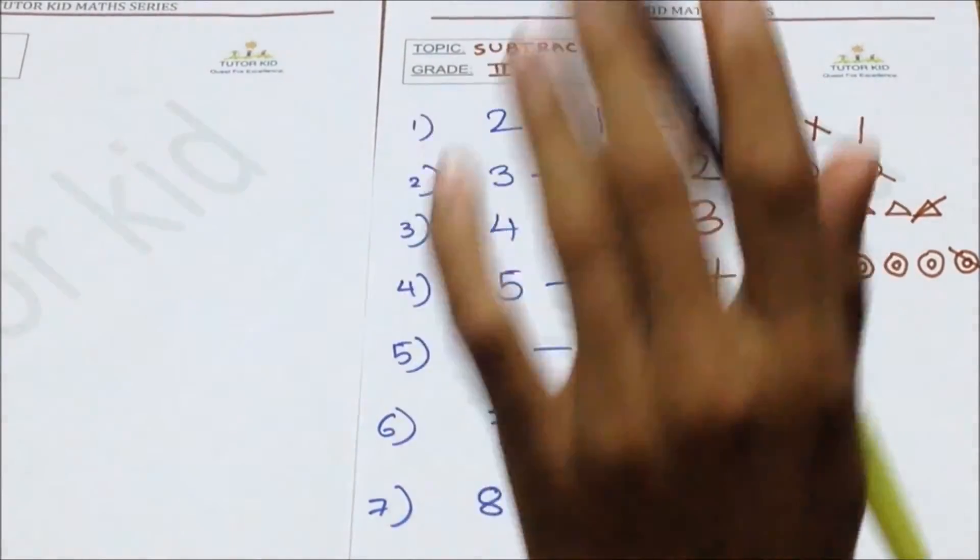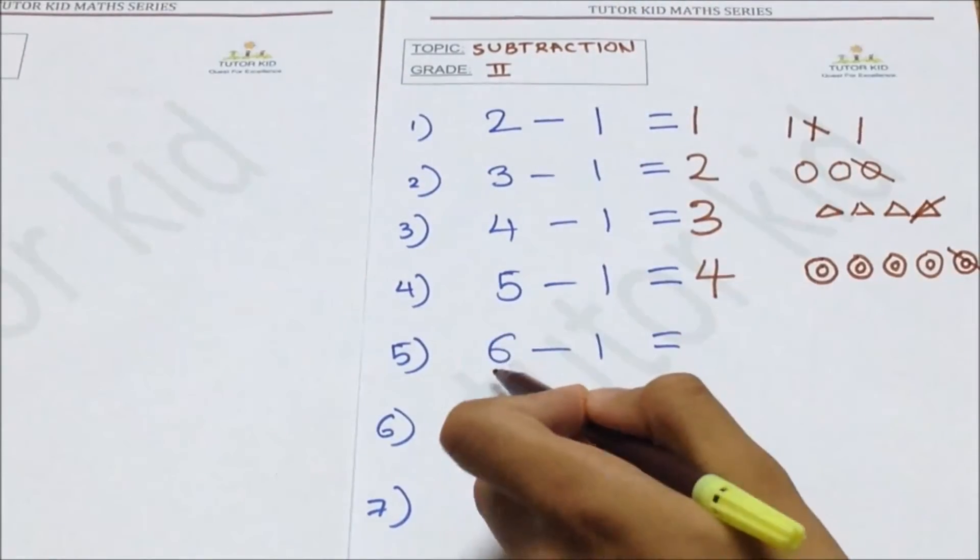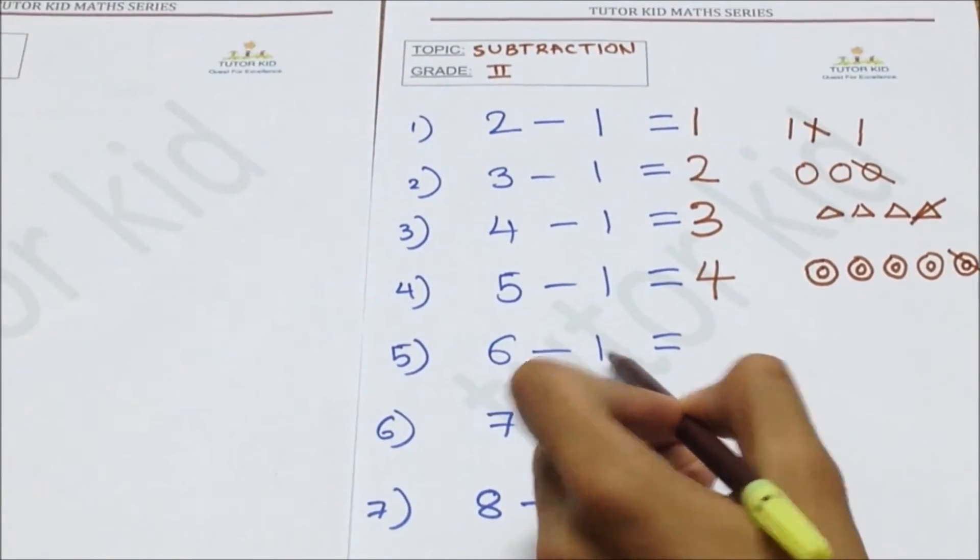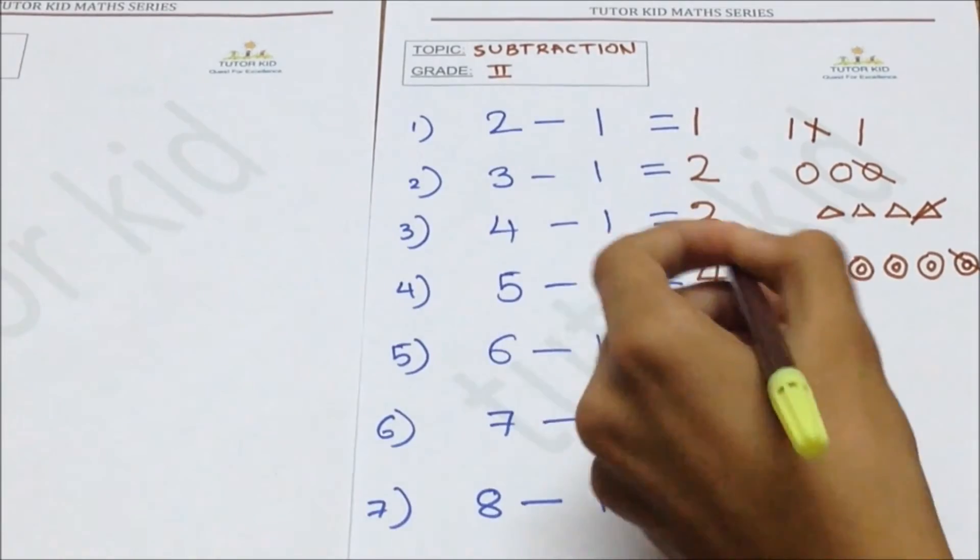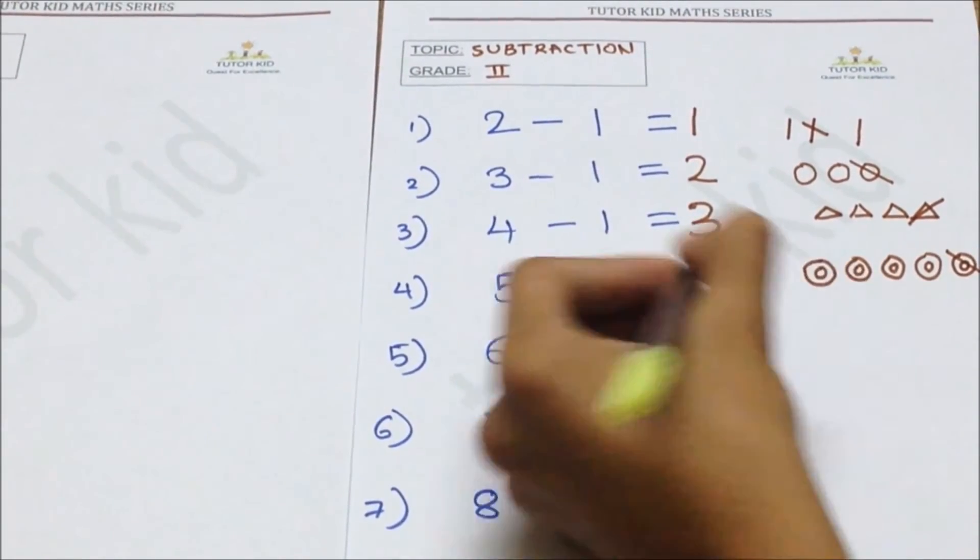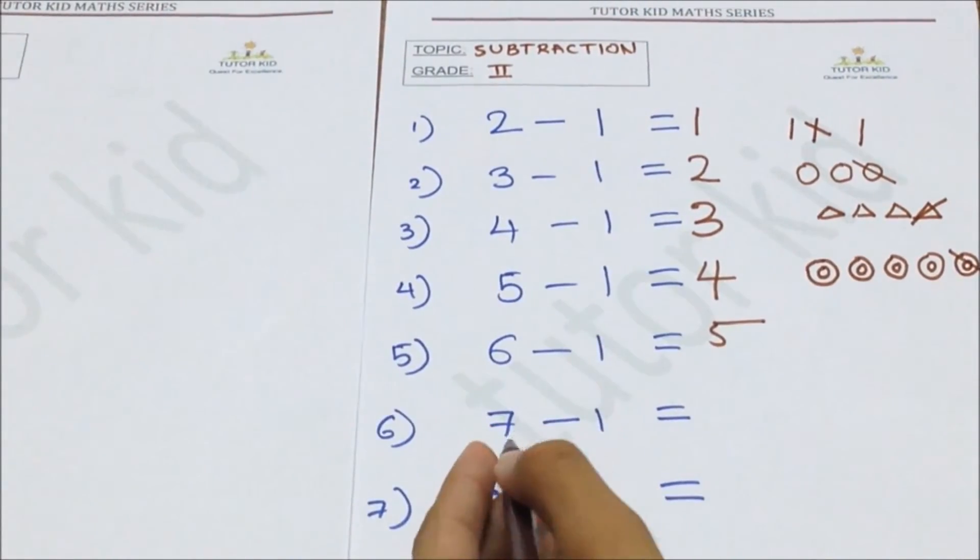We have six and we have taken one from that, so the answer is five.